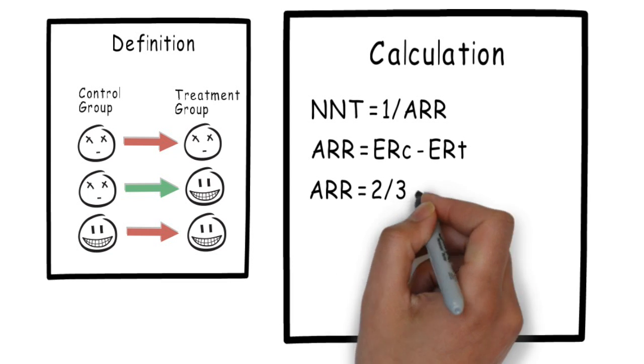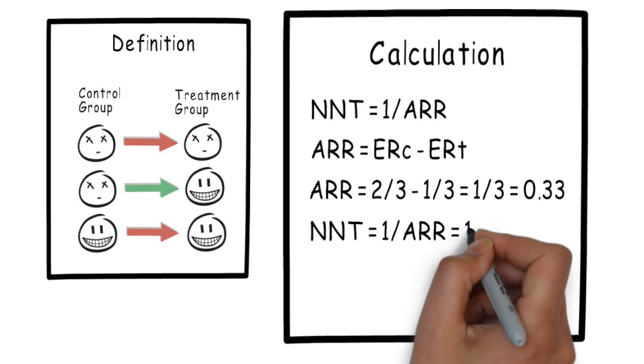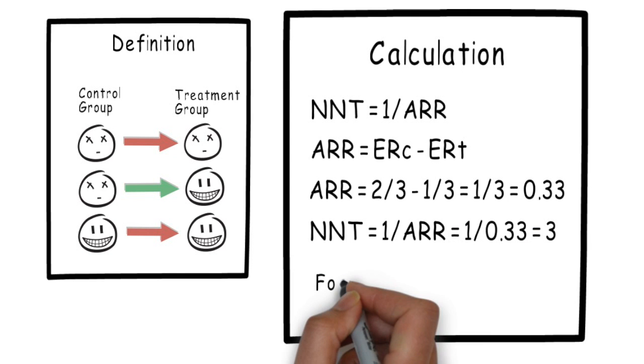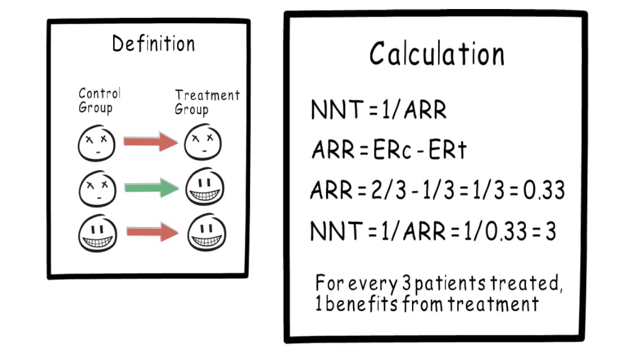If we go back to our earlier example, the event rate in the control group bad outcome is two thirds. The event rate in the treatment group is one third, giving us a difference of one third or 0.33. If we plug this into our NNT equation, one over the absolute risk reduction, the NNT becomes one over 0.33 or three. For every three patients that we treat, one benefits.